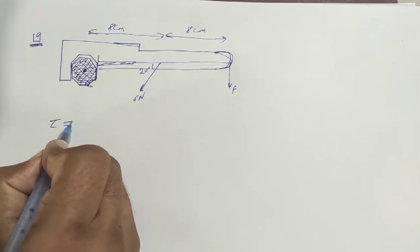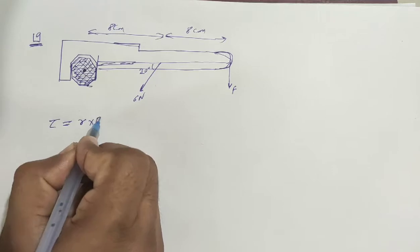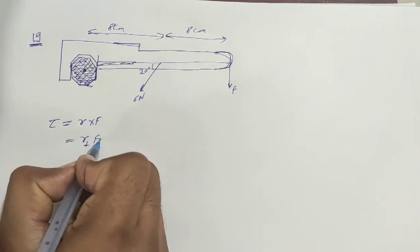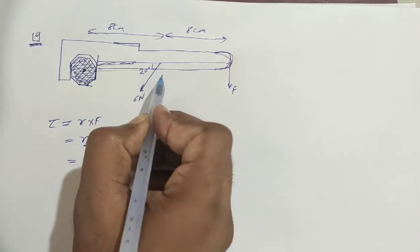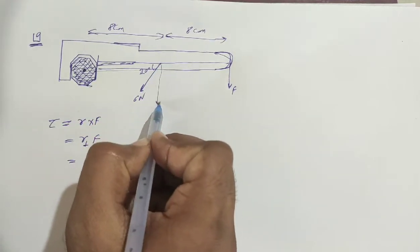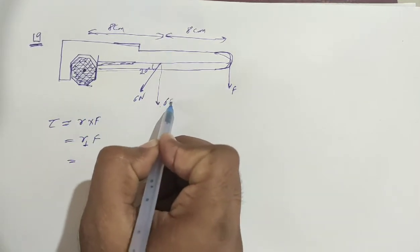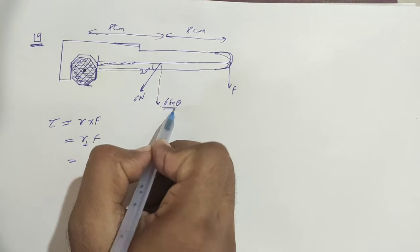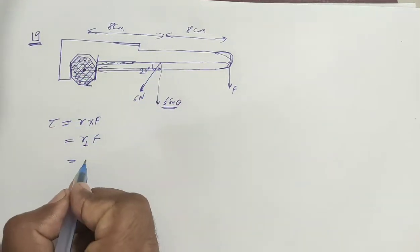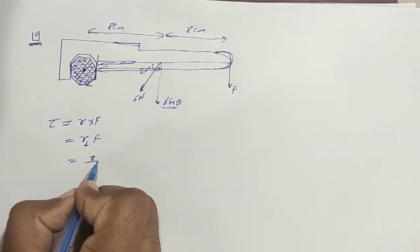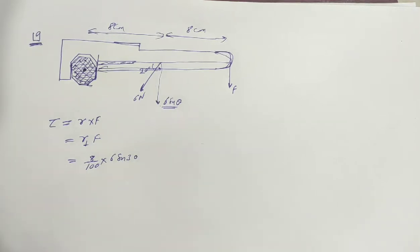Your torque is R perpendicular times F. So 6 Newton's R perpendicular distance is how much? This perpendicular distance is perpendicular and perpendicular force is this. So perpendicular force is 6 Newton's 6 cos component and 6 sin component. 6 sin is what happens, it's a force. And perpendicular distance is this, 8 cm. So we have to convert to meter. So 8 by 100 into 6 sin 30. So we have torque.